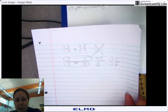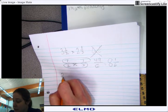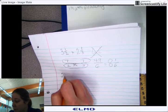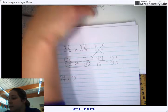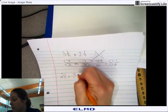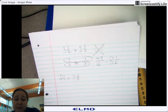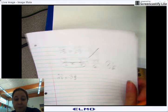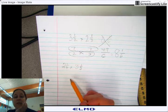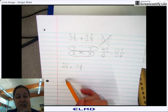6 can go into 49 eight times, giving you 48, 1 left over gives you 1/6. Let's try another one. Let's try 2¼ times 3⅕. First thing you have to do is turn it into an improper fraction.